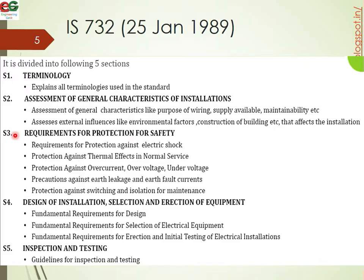Section 4 covers the design of installations — selection and erection of equipment, installation and design of equipment, power points, requirements for selection of electrical equipment, and temporary equipment. Section 5 covers the erection, installation, and testing of electrical installations, including the initial testing. Inspection and testing procedures are detailed in this section.